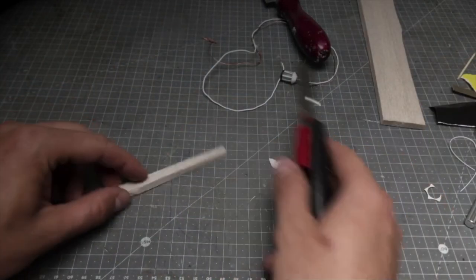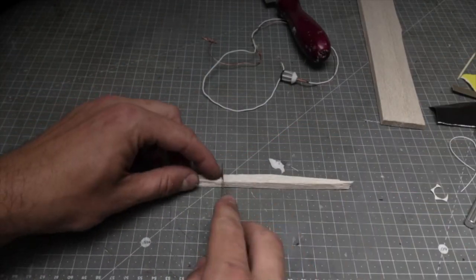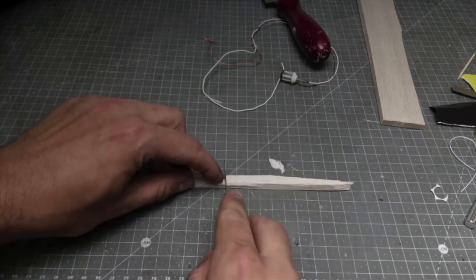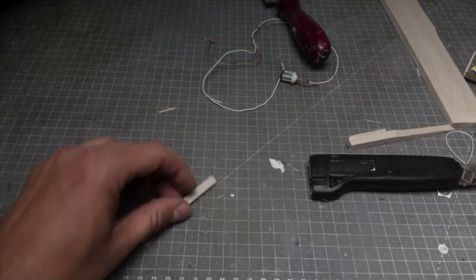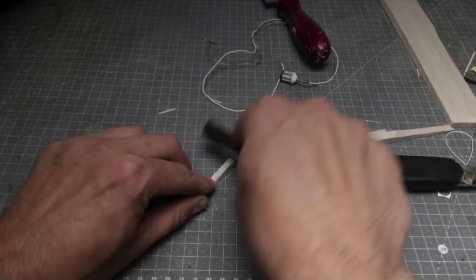To start with the lamp post I'm using a piece of balsa wood. I'm just cutting it to the rough shape and eyeballing the length of it. We can always adjust it. Then a small treatment with the wire brush just to imitate the wood grain.